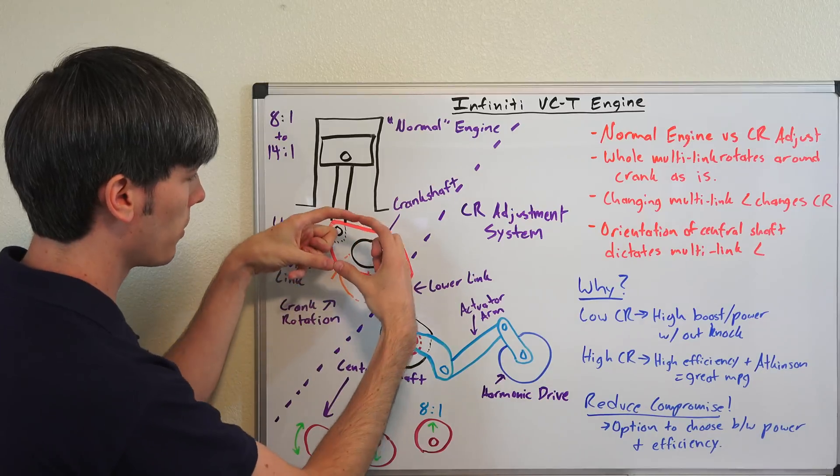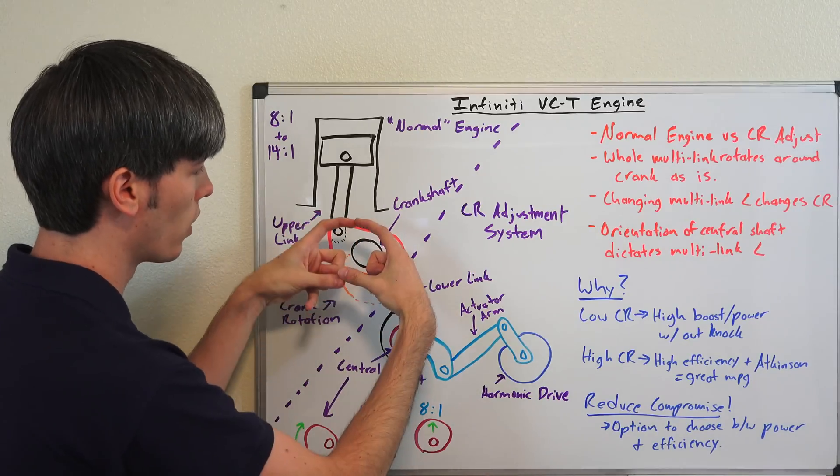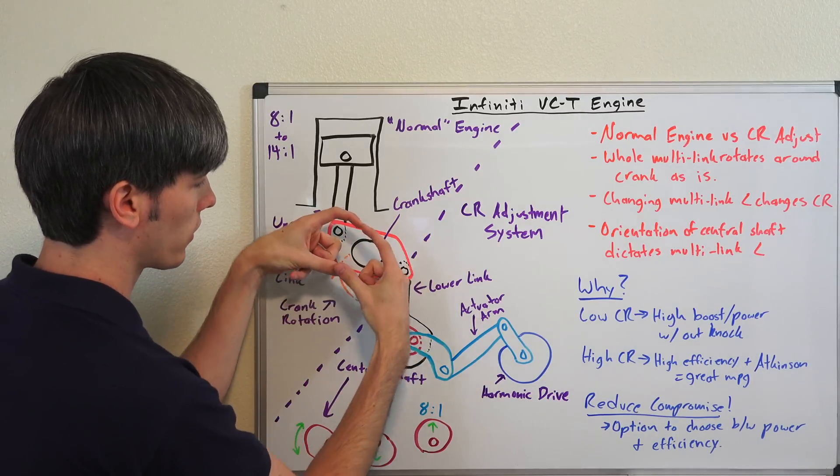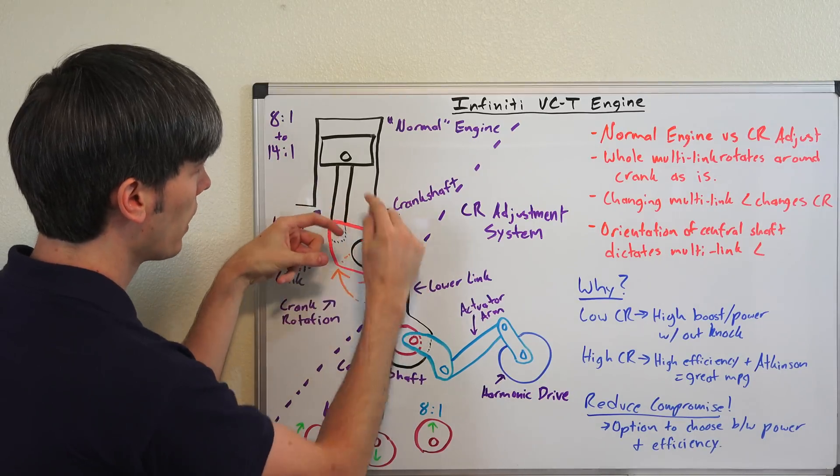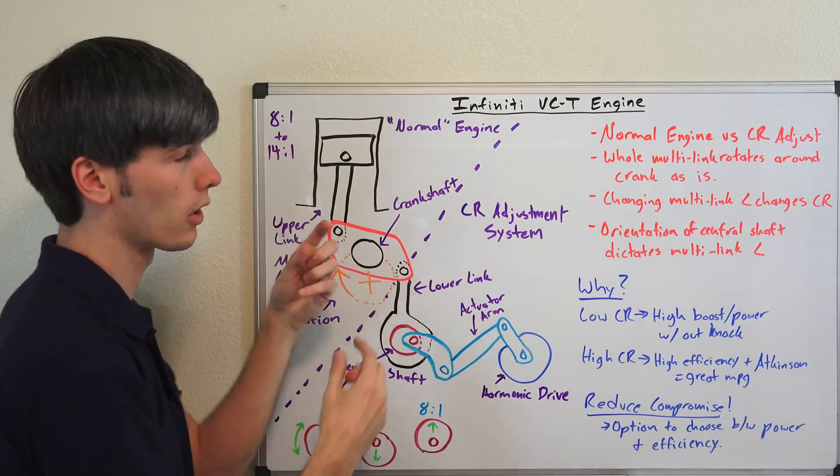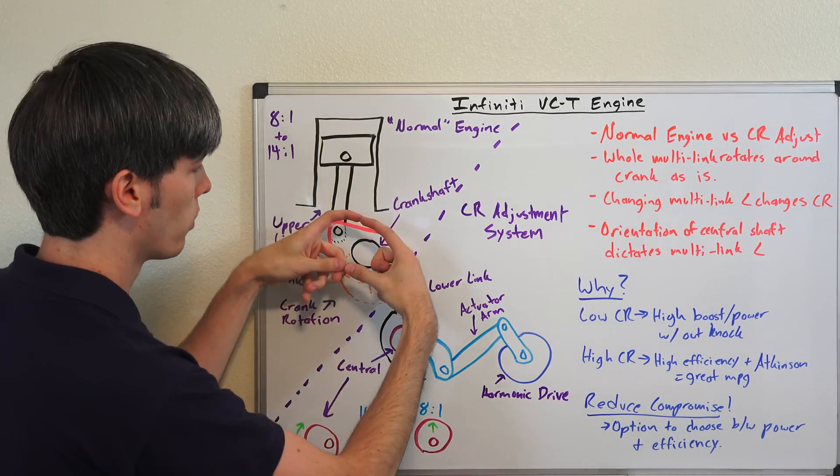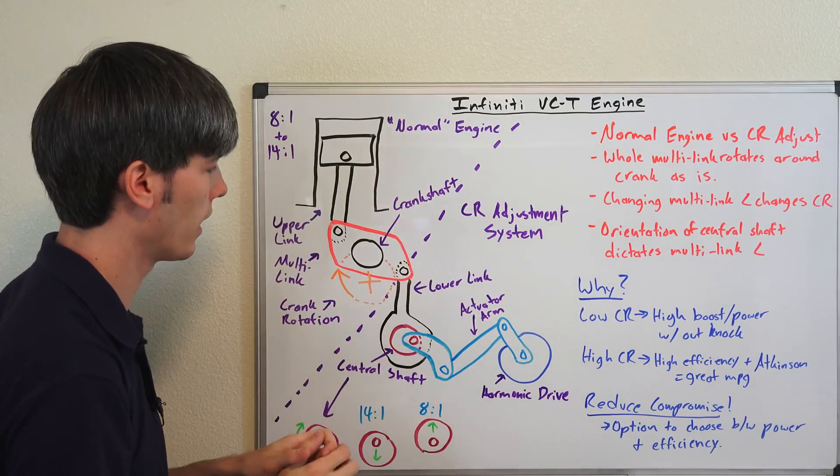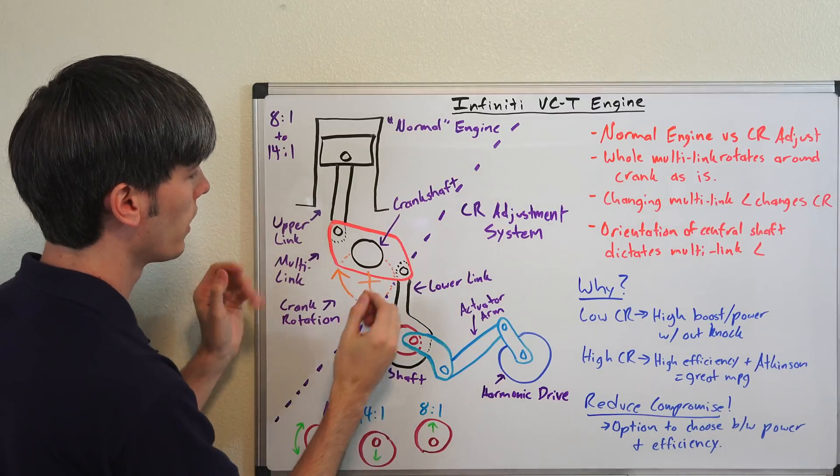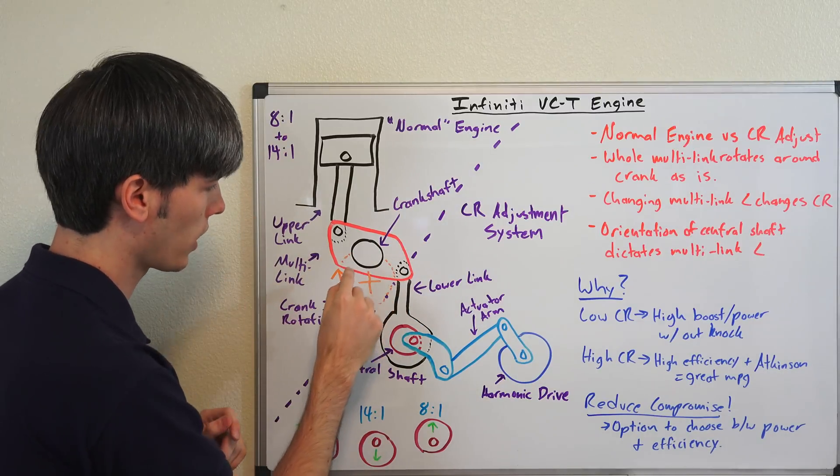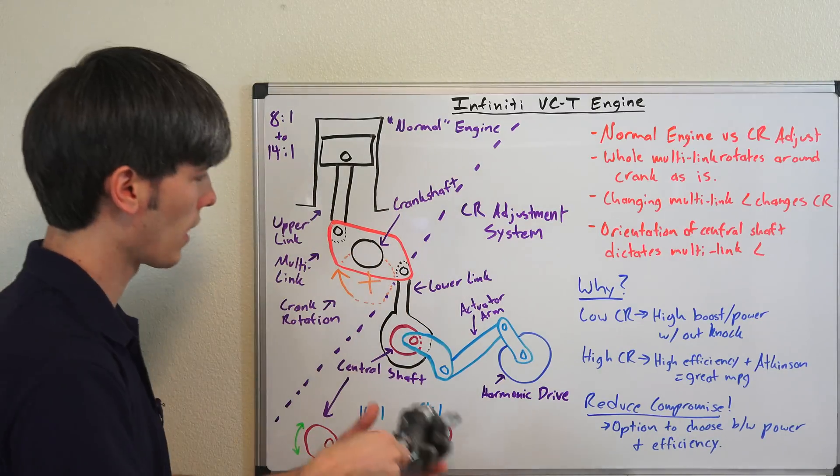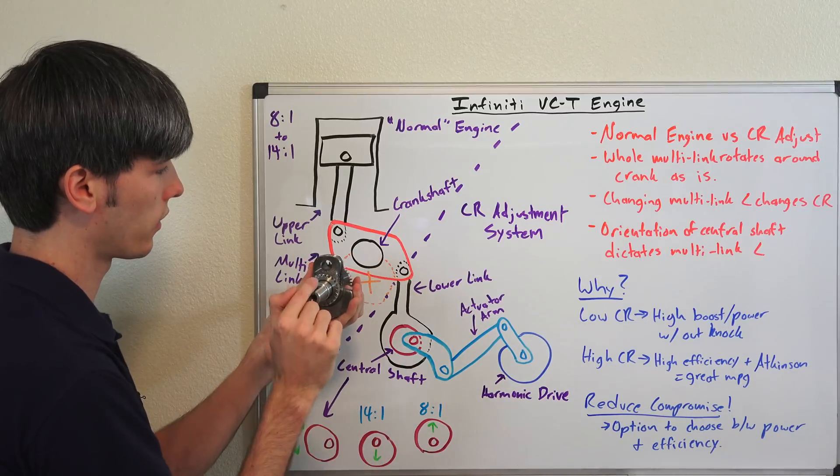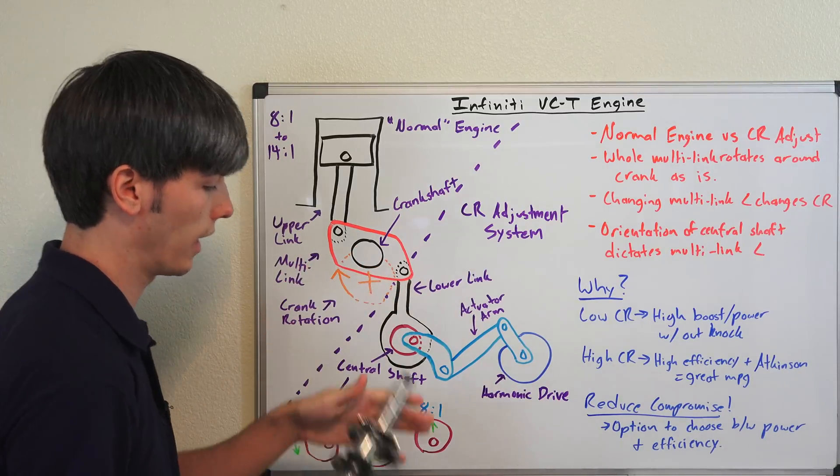That's what we're going to be using to change the compression ratio, is changing the angle of this rectangular piece right here. You can see if you were to tilt it up, that would cause this piston to move up, increasing the compression ratio. And if you were to tilt it down, that would decrease the compression ratio, pulling the piston down. What we're looking at right here is top dead center, the crankshaft oriented like that. You've got the top of it right here, and then the center of it right there, and it's about to rotate down like that.